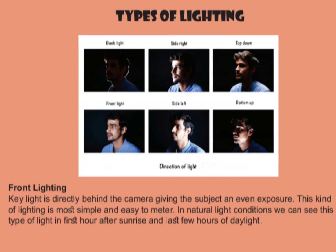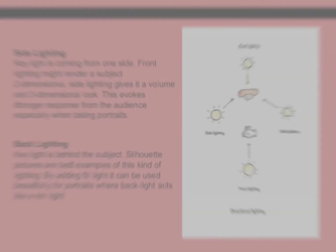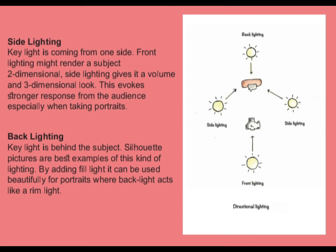Types of lighting: First is front lighting, where the key light is directly behind the camera, giving the subject an even exposure — simple and easy to meter. Next is side lighting, where the key light comes from one side. While front lighting may render a subject two-dimensional, side lighting gives it volume and a three-dimensional look, evoking a stronger response from the audience, especially in portraits.